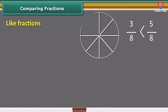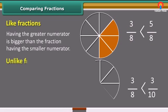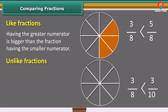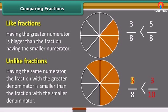In like fractions, the fraction having the greater numerator is bigger than the fraction having the smaller numerator. In the case of unlike fractions having the same numerator, the fraction with the greater denominator is smaller than the fraction with the smaller denominator.